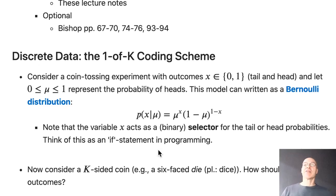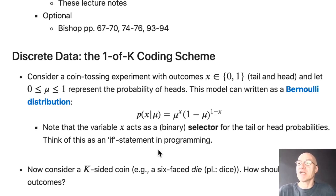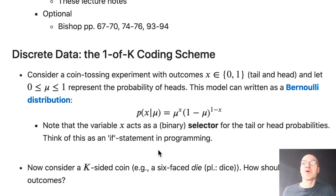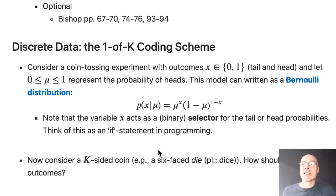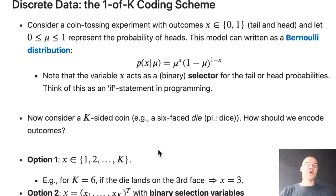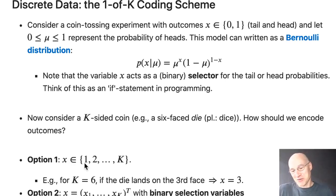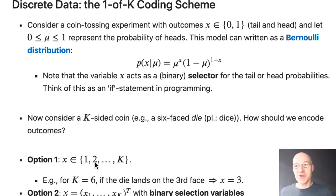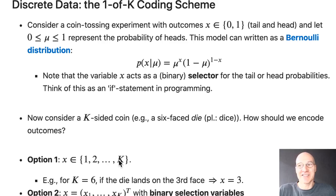Now let's scale up to a die, which has six sides, but more generally K sides. How do we encode outcomes? The most obvious way is to say X equals one if it lands on the first face, X equals two on the second face, and so forth up to X equals six. That's one valid approach.